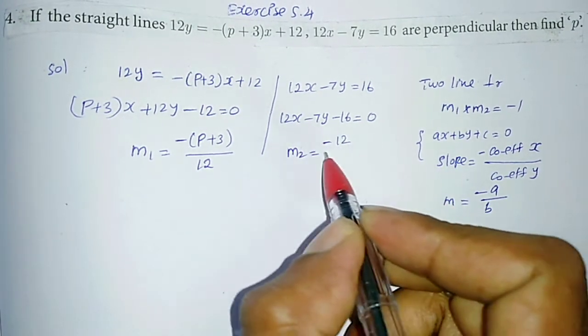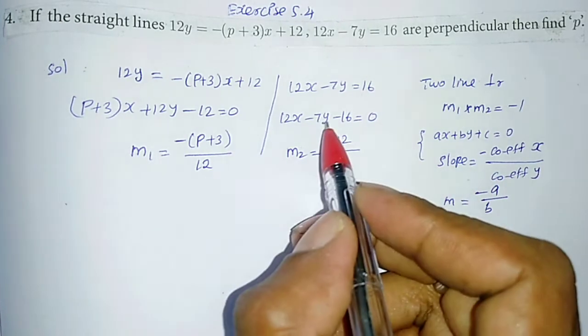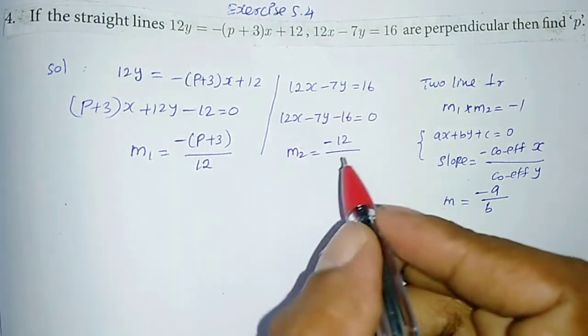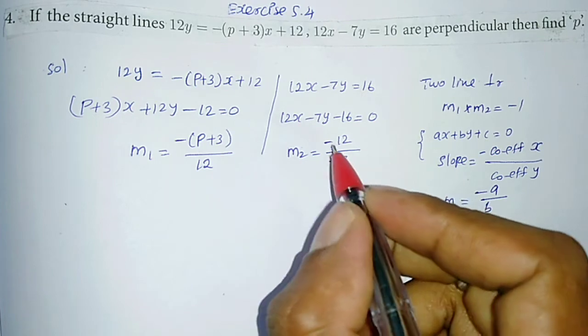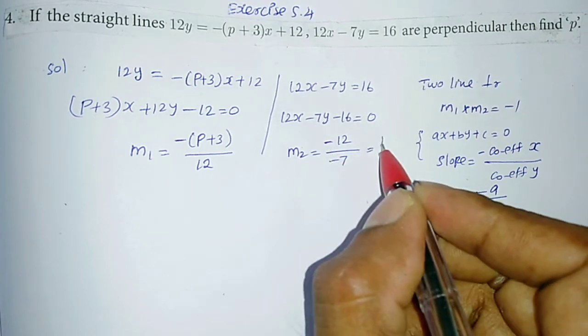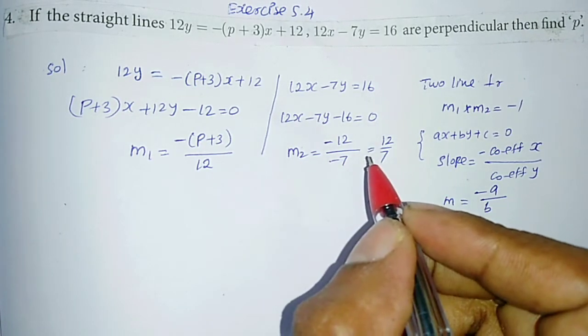For M2, the coefficient of x is 12 and coefficient of y is minus 7. So M2 equals minus 12 divided by minus 7. The minus signs cancel, giving M2 = 12 divided by 7.